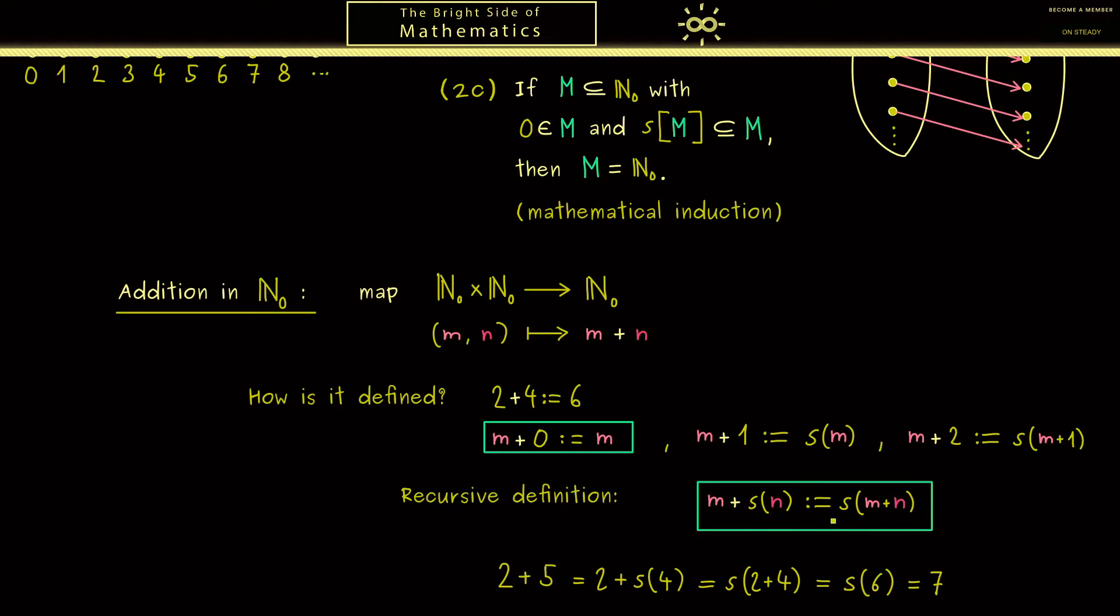Therefore such a definition is called a recursive definition or an inductive definition. Now since we are here in the foundations of mathematics, we have to make sure that such a definition makes sense. And indeed, one can prove this in general by using this property 2c here. This fact is then known as Dedekind's principle of recursive definition.